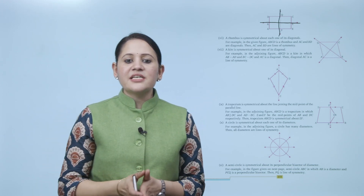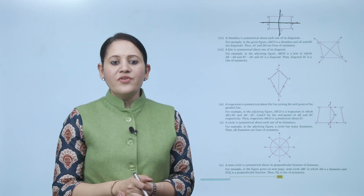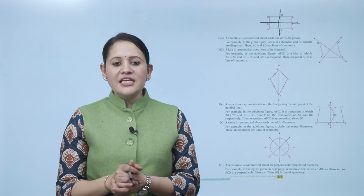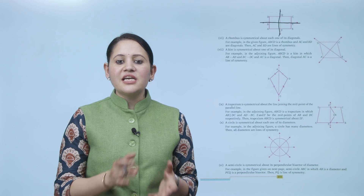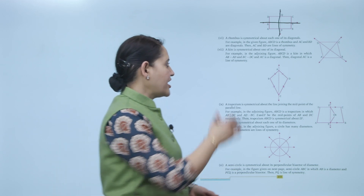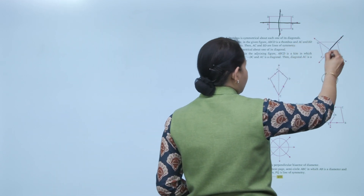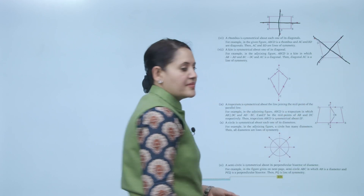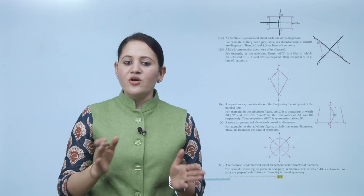A rhombus is symmetrical about each one of its diagonals. For example, in the given figure, ABCD is a rhombus and AC and BD are the diagonals. Then AC and BD are the lines of symmetry for the rhombus. A kite is symmetrical about one of its diagonals.